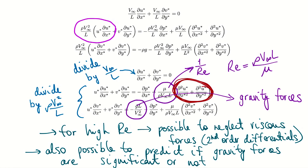This non-dimensionalization approach can be applied to any set of governing equations — including heat transfer, where you'd do the same analysis to know when certain effects can be neglected. You don't have to derive these parameters from scratch every time since Reynolds number and the gravity coefficient were already known, but it's important to understand how to do it.